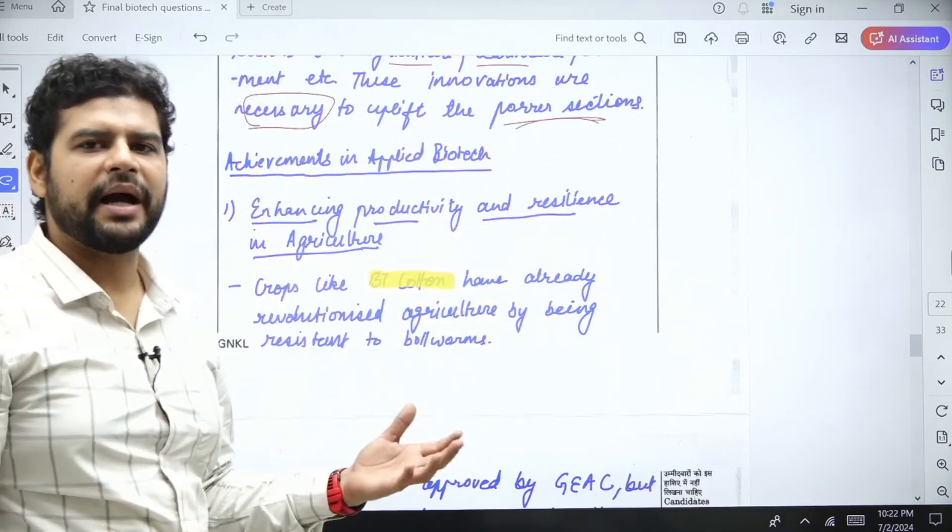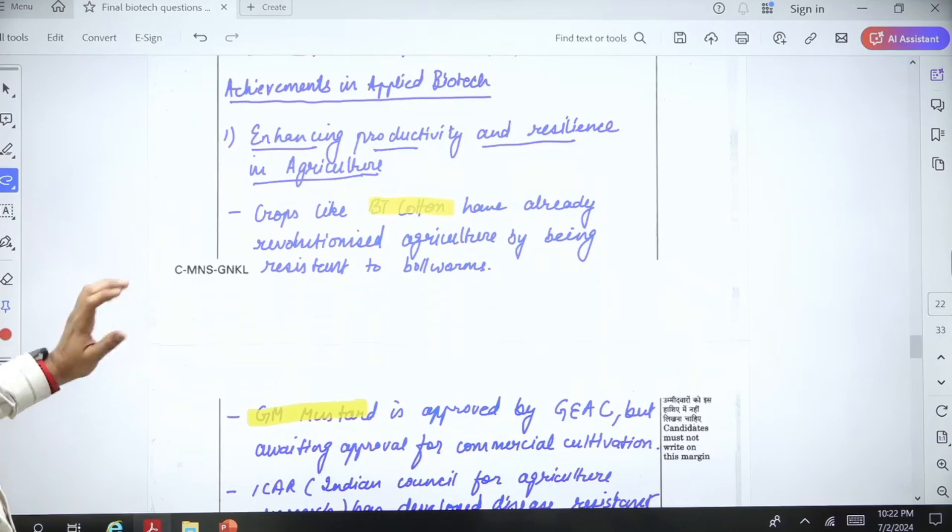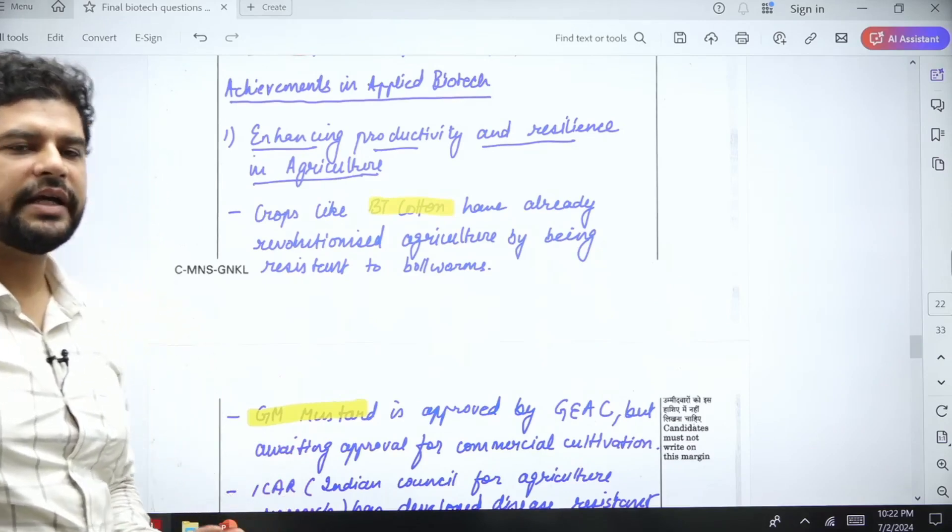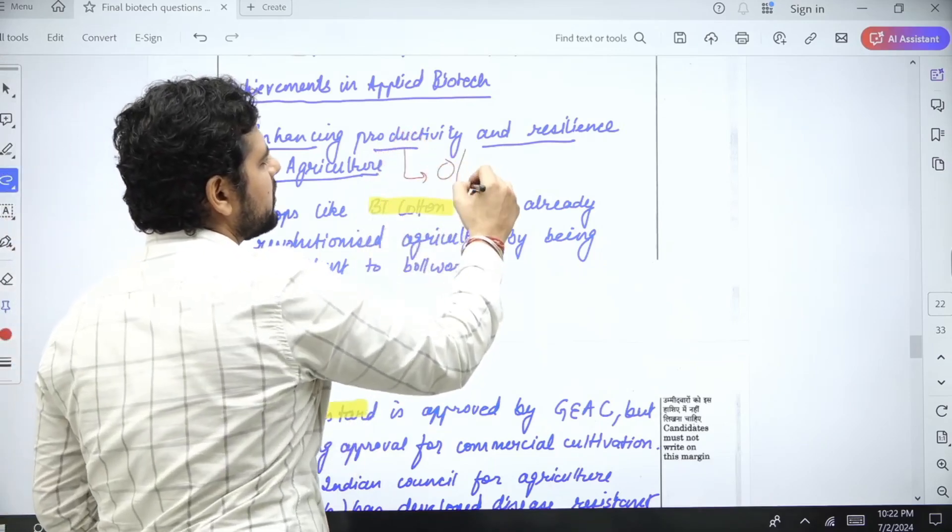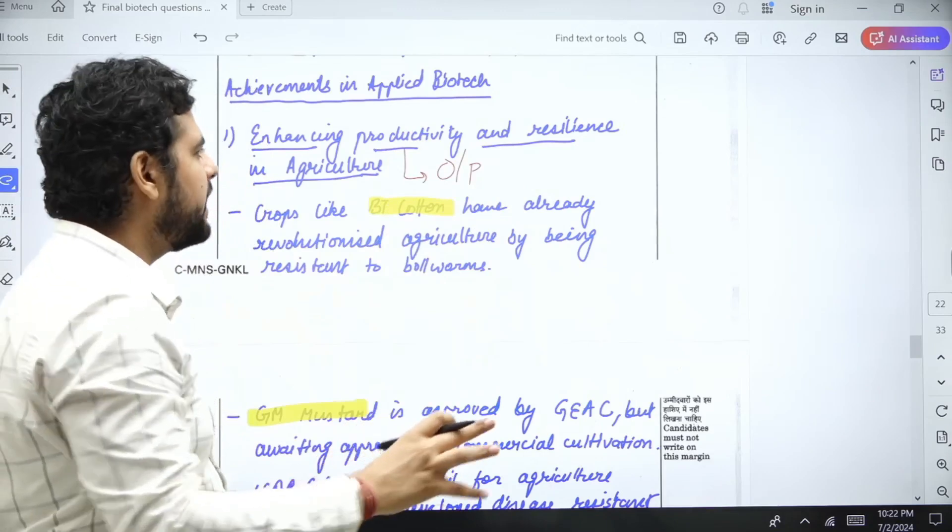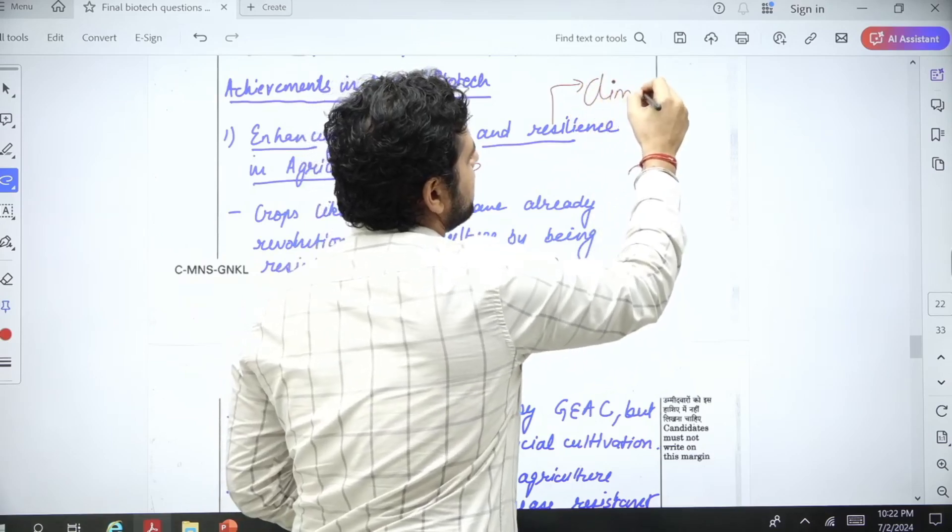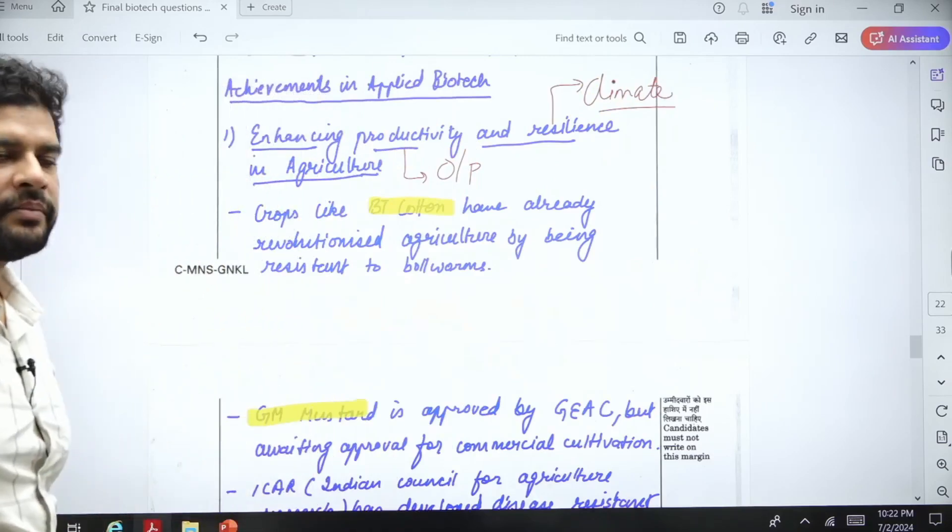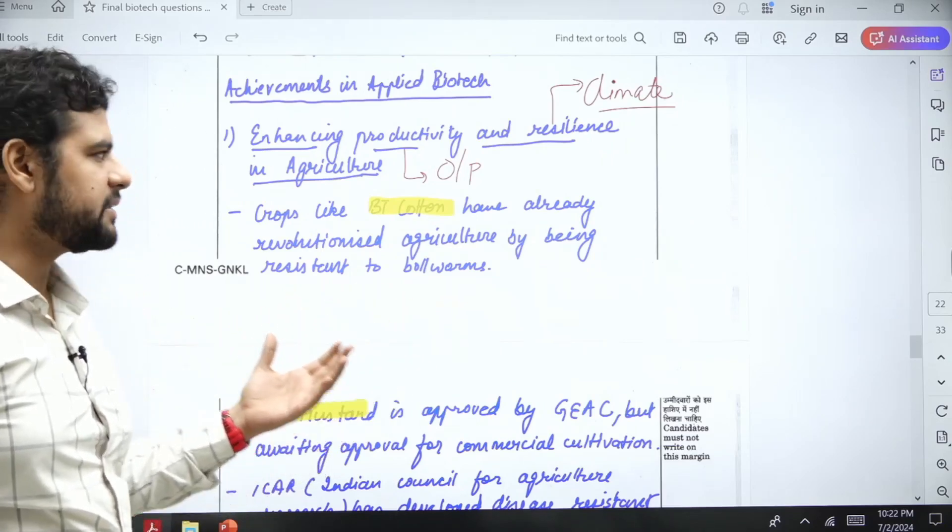What are the achievements in applied biotech? First is in agriculture: it can enhance productivity and resilience. Productivity means you get more output on the same input, and resilience means climate resilience. Genetically modified crops can be used in improving the climate resilience.